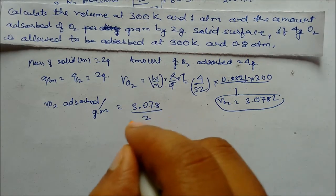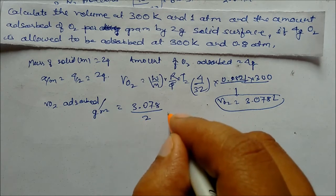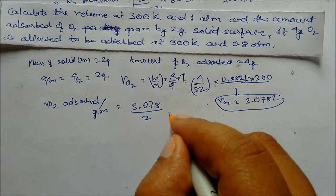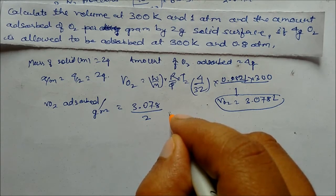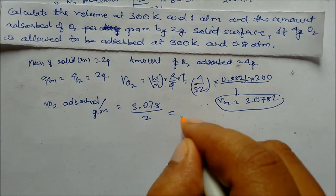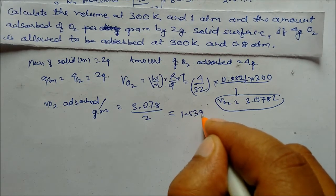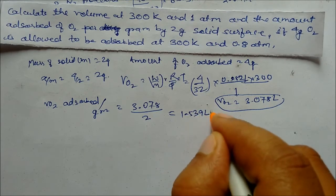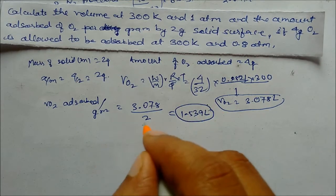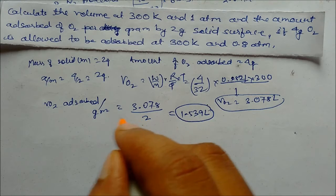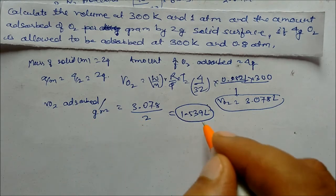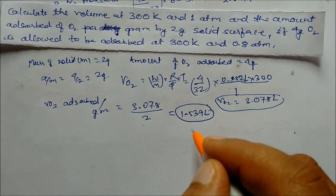So volume per gram: 3.078 divided by 2 grams of solid gives 1.539 liters. So for 2 grams of solid, the volume of oxygen adsorbed is 1.539 liters. This is our answer.